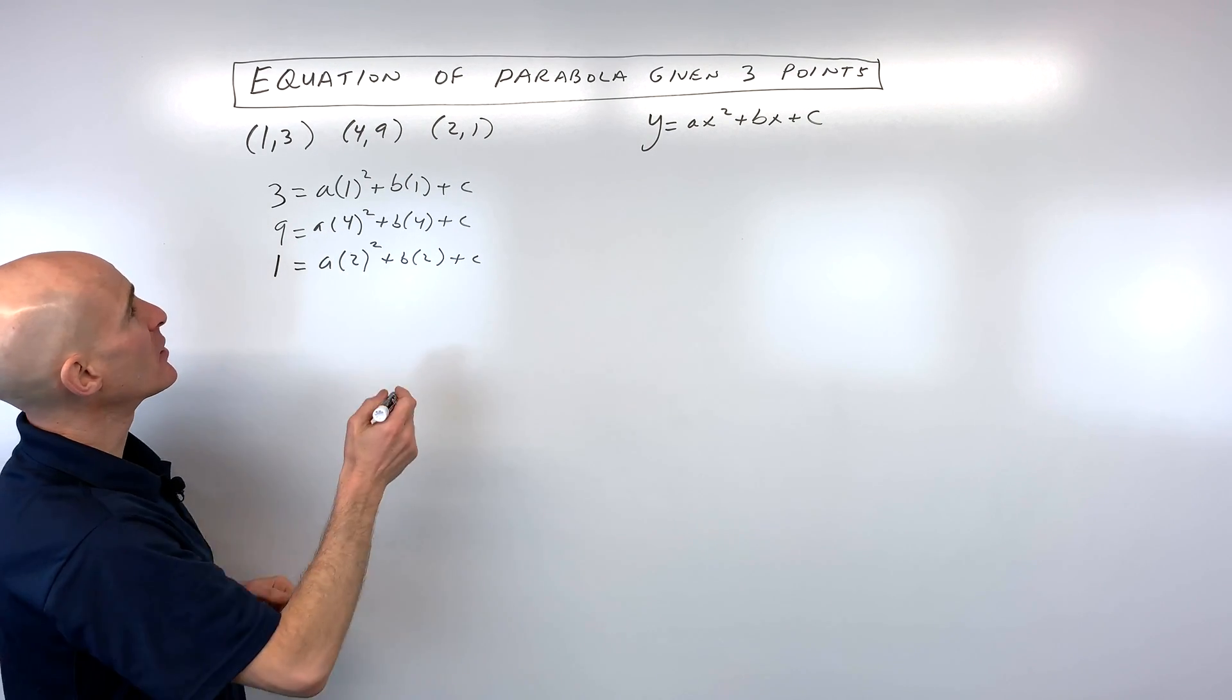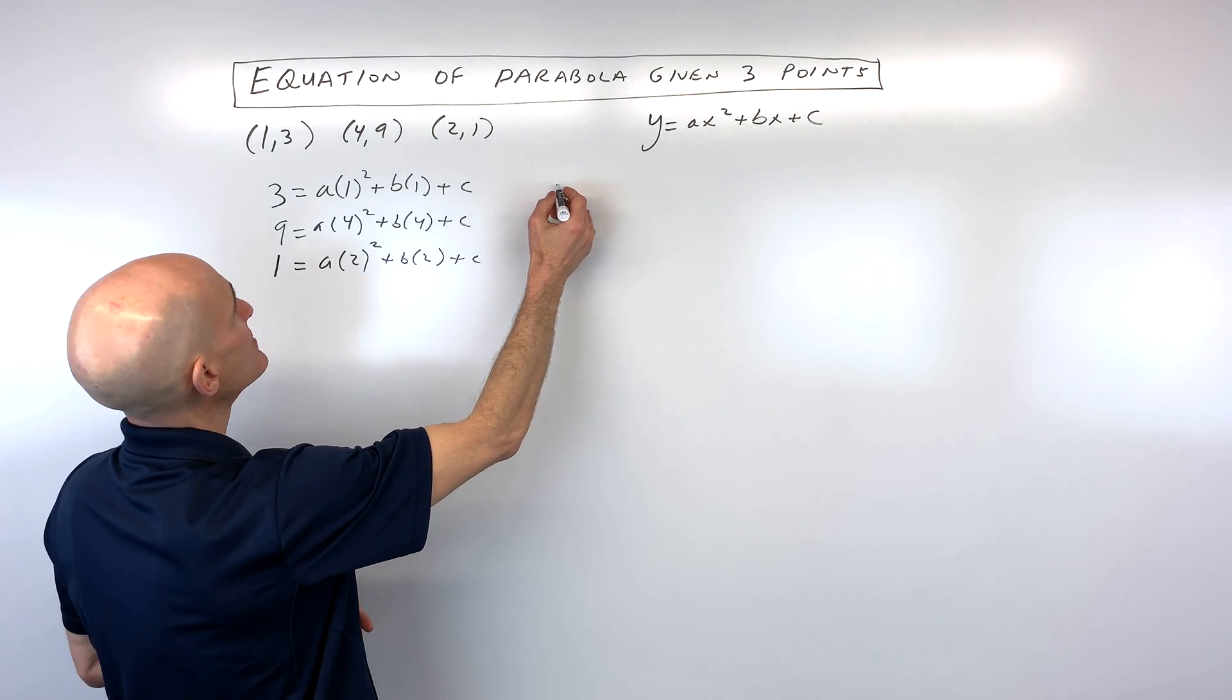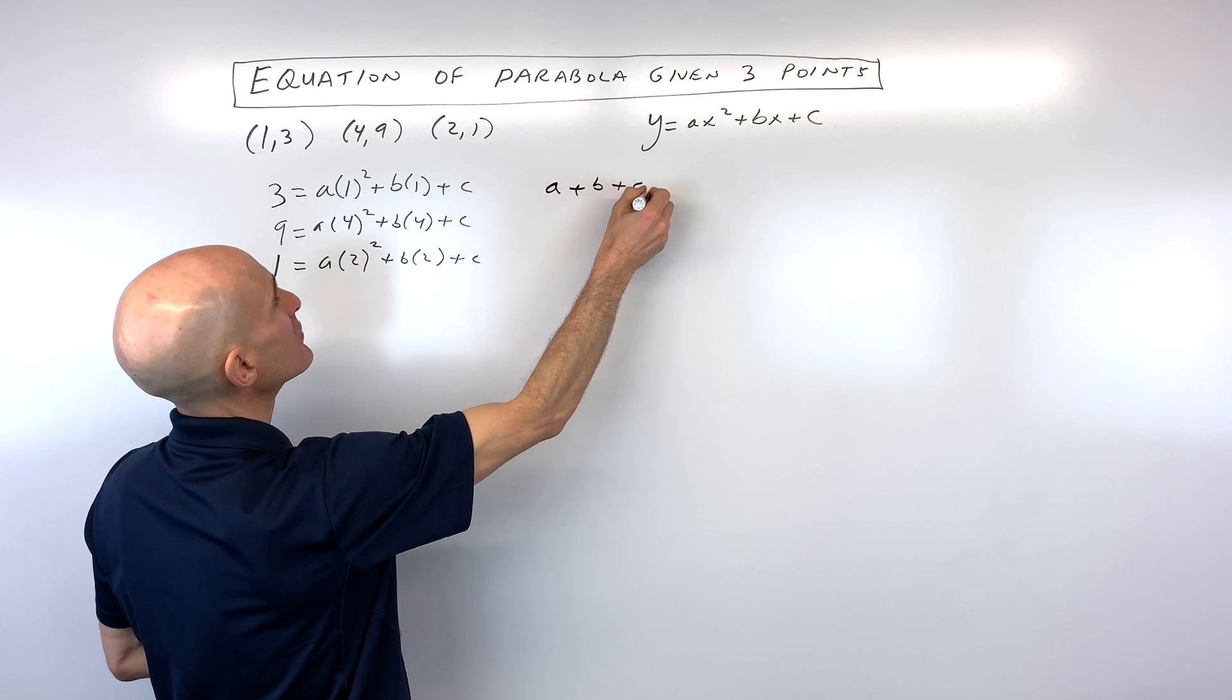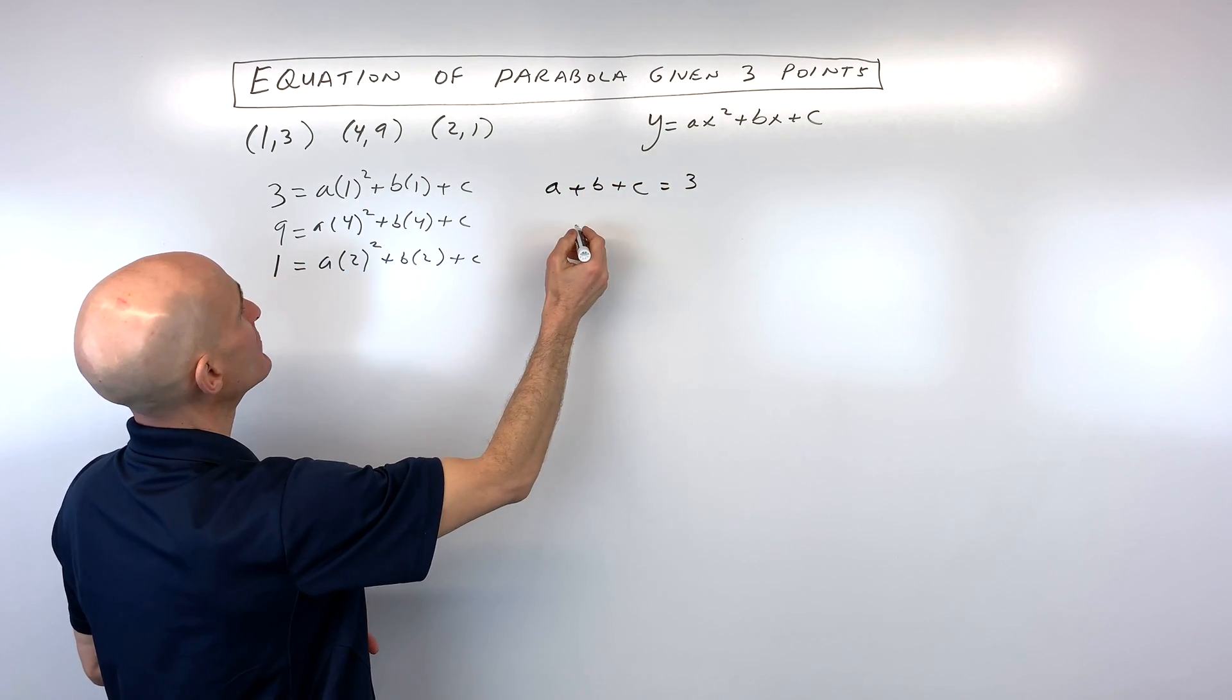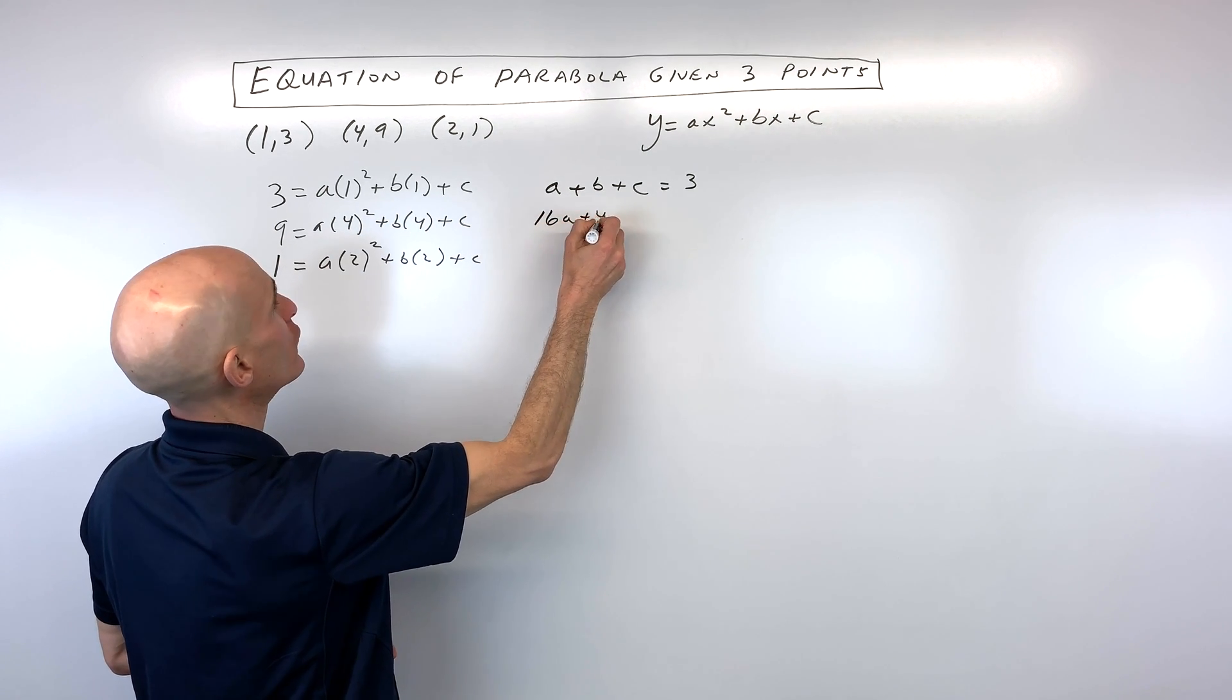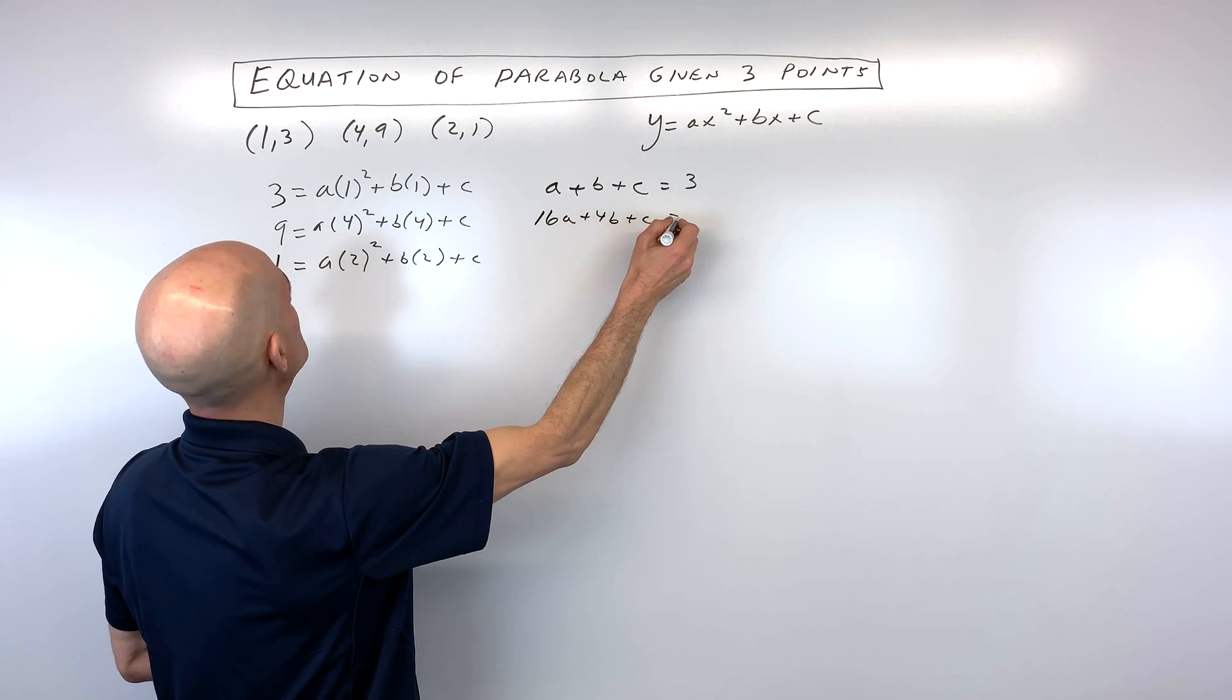But I'm going to go ahead and simplify this down a little bit further. So we've got, this is 1 squared is 1, so that's going to give us a plus b plus c equals 3. The second equation I'm going to write as 4 squared is 16 times a, plus 4 times b, plus c equals 9.